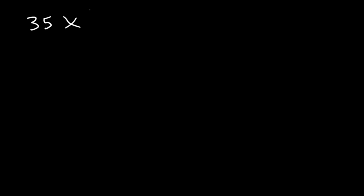In this lesson, we're going to focus on simplifying rational expressions. So let's start with our first example: 35x to the 5th over 49x squared. Go ahead and simplify this expression.